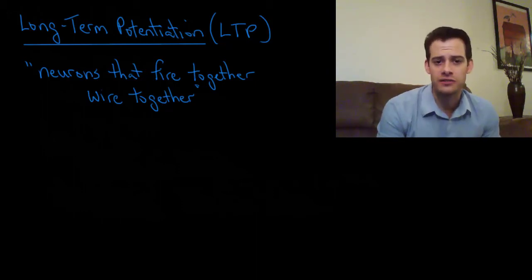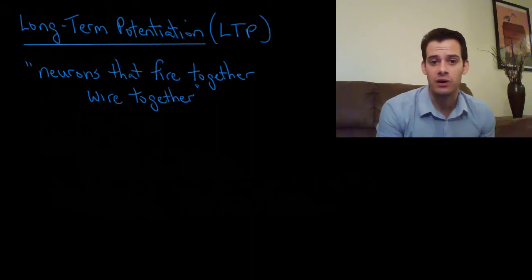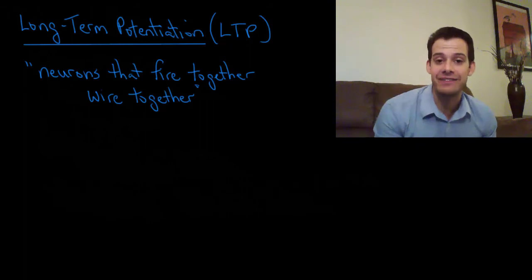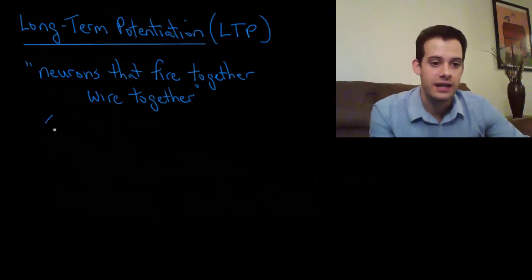So we're going to look at something known as long-term potentiation or LTP. Now long-term potentiation is often summarized with the expression neurons that fire together wire together. Of course the neurons don't actually wire together, they maintain their separation at the synapse, this gap between the neurons. But what this means is that neurons change their connection to one another and they strengthen it through chemical signaling. So this refers to strengthened connection between neurons.